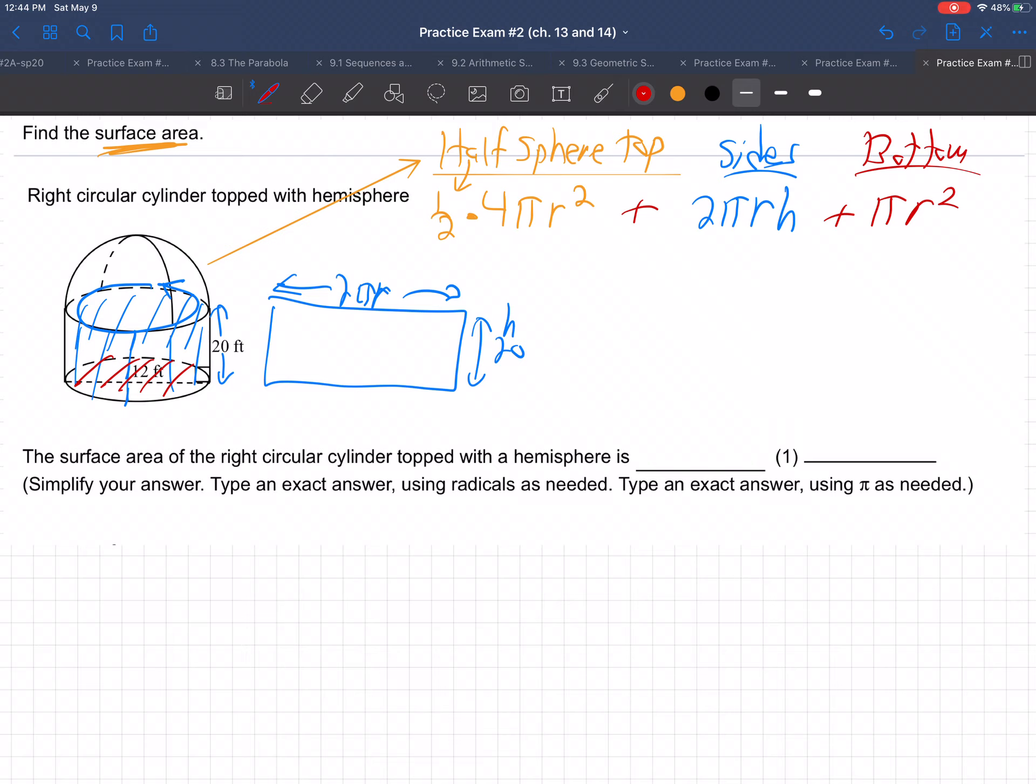Now a common mistake that a lot of people make on this is they'll throw in the top, because they'll just think, well, we've got to do the bottom and the top up here. No, no, no, that top right there, that circle, that's not the top. The top is this big hemisphere, the half a ball, half a sphere. The top is not this circle. We don't need another πr². We don't need 2πr² there. We just need 1, right? Because that circle is not the top. The top is the half a sphere, right? So watch out for that. Easy mistake to make.